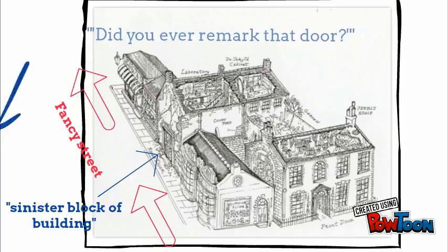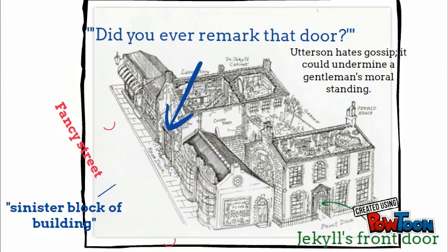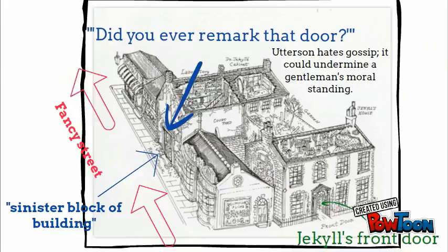Utterson knows that the door that Enfield refers to as having an odd story connected to it is linked to Jekyll's house in the adjacent street, and that any story that Enfield tells is going to relate to his friend. It's therefore no wonder that he says 'indeed' with a slight change of voice when Enfield mentions this.